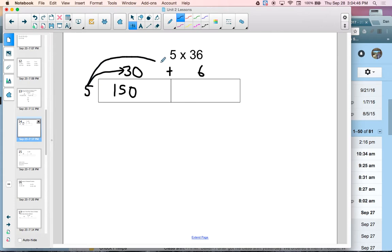And then I'm going to multiply 5 times 6. 5 times 6 is 30. And then I'm going to add these two together. 150 plus 30 gives me 180.